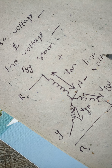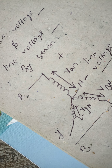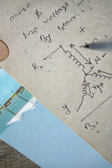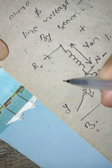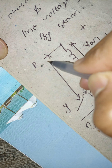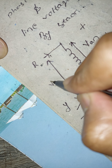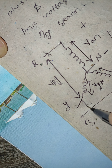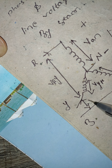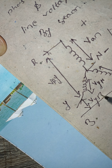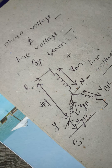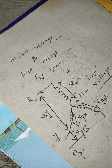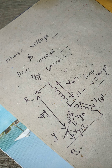Take your multimeter and connect phase and neutral — R to Y — then this is your phase voltage. This is your phase voltage.